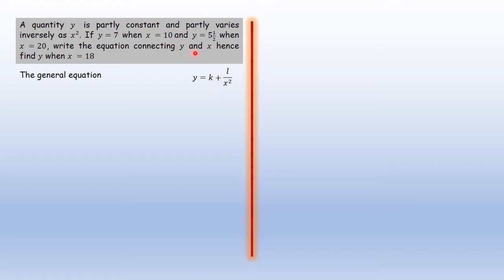And, meaning plus, another term varies partly inversely as x squared. So we have inversely, meaning x squared is a denominator in a fraction, where the numerator will be the other constant l. This is the general equation.